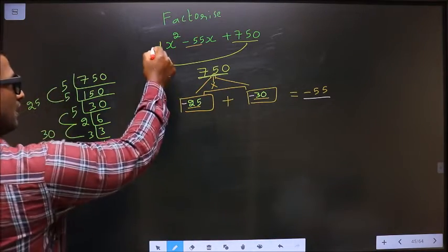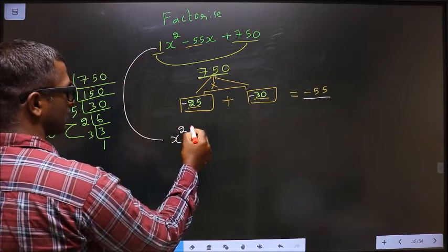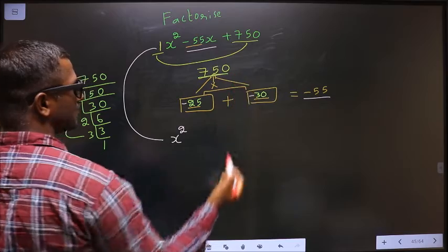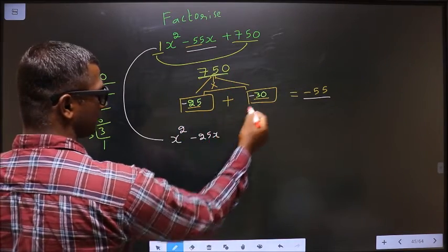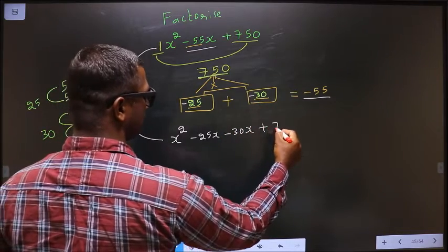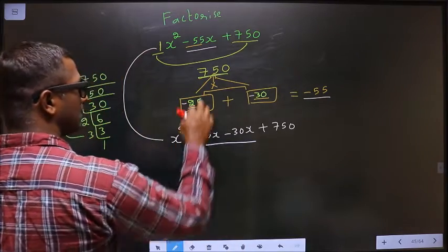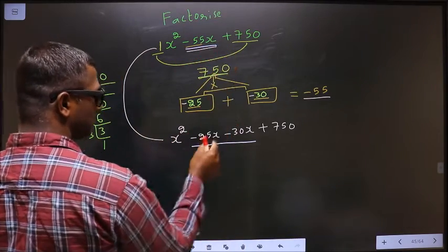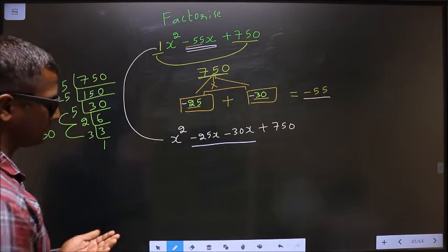Next. Now this will change to x² in place of -55x. Now I write -25x - 30x + 750. In place of -55x, now I have written -25x - 30x.